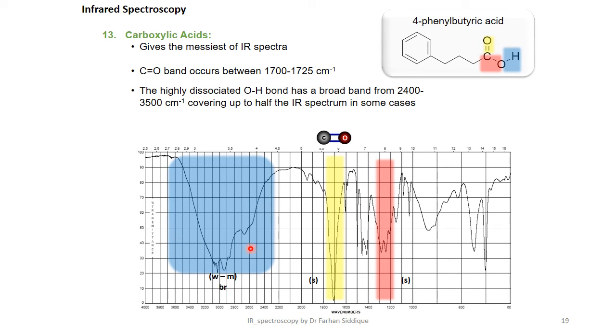In carboxylic acid a wide band for C=O between 1700 to 1725 shown in yellow. Also an O-H bond has a broad band from 2400 to 3500 cm⁻¹.